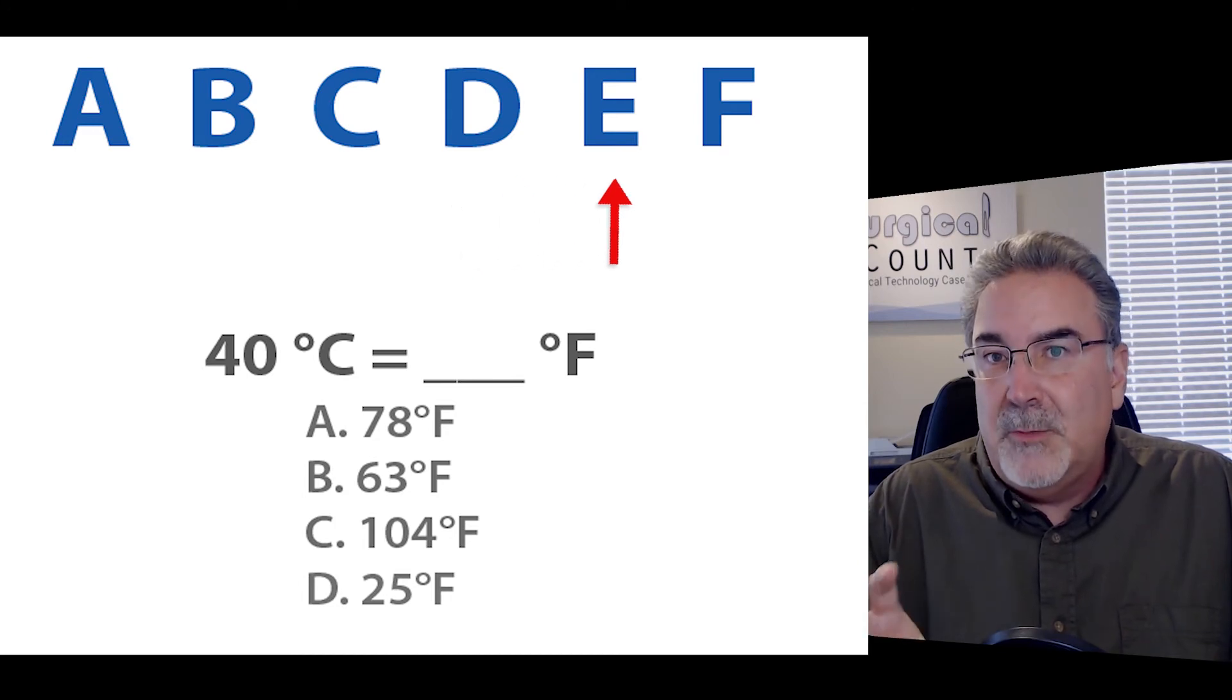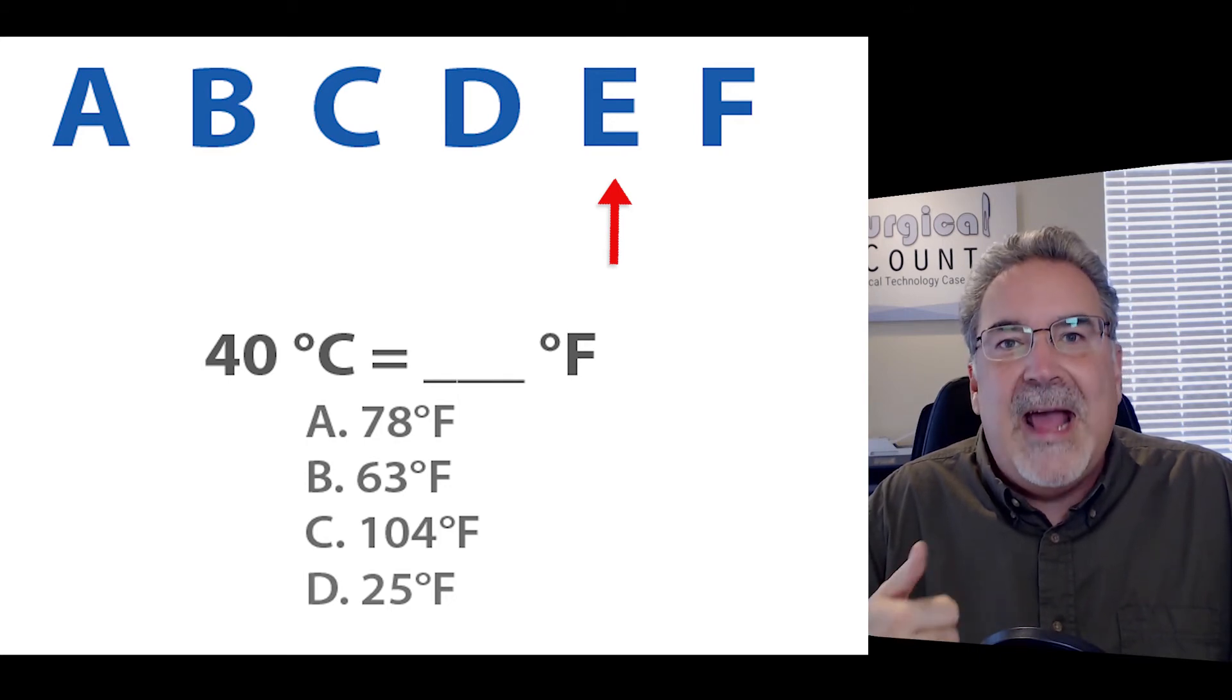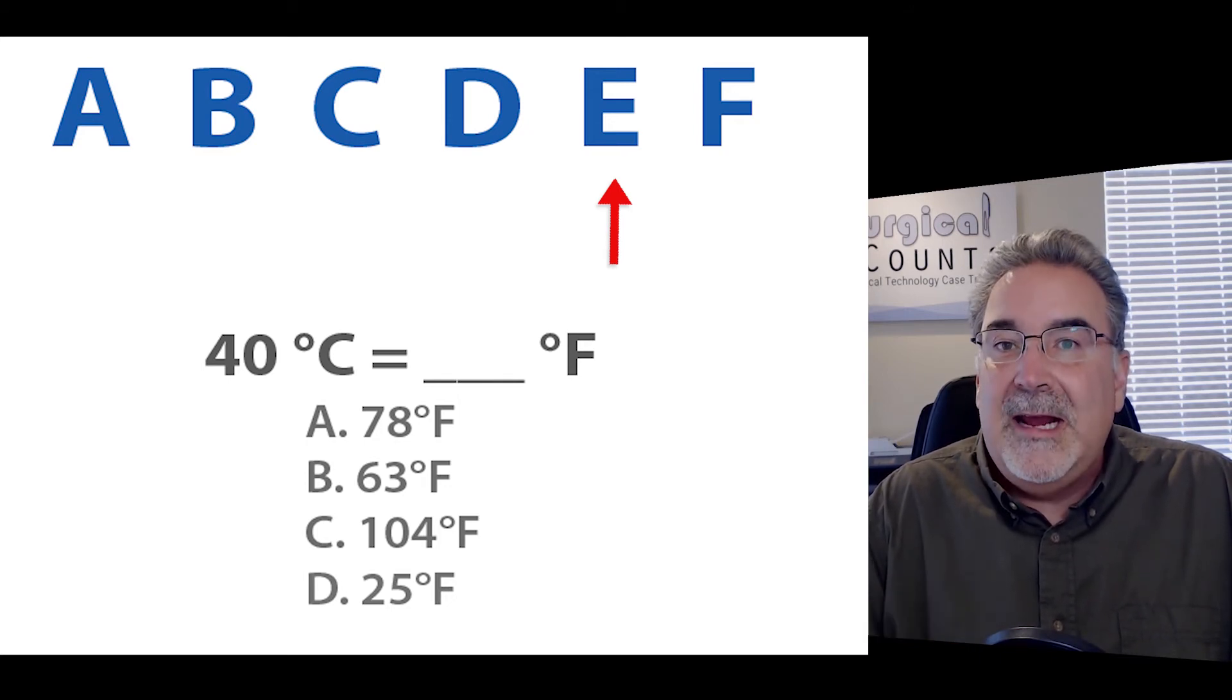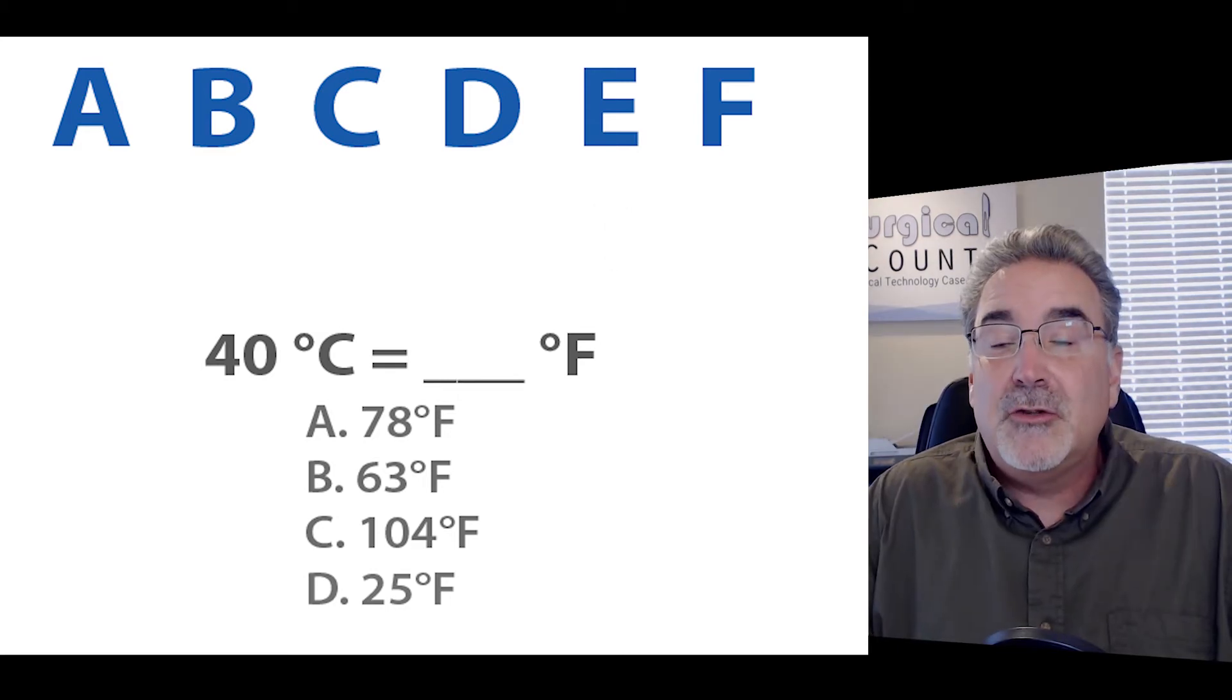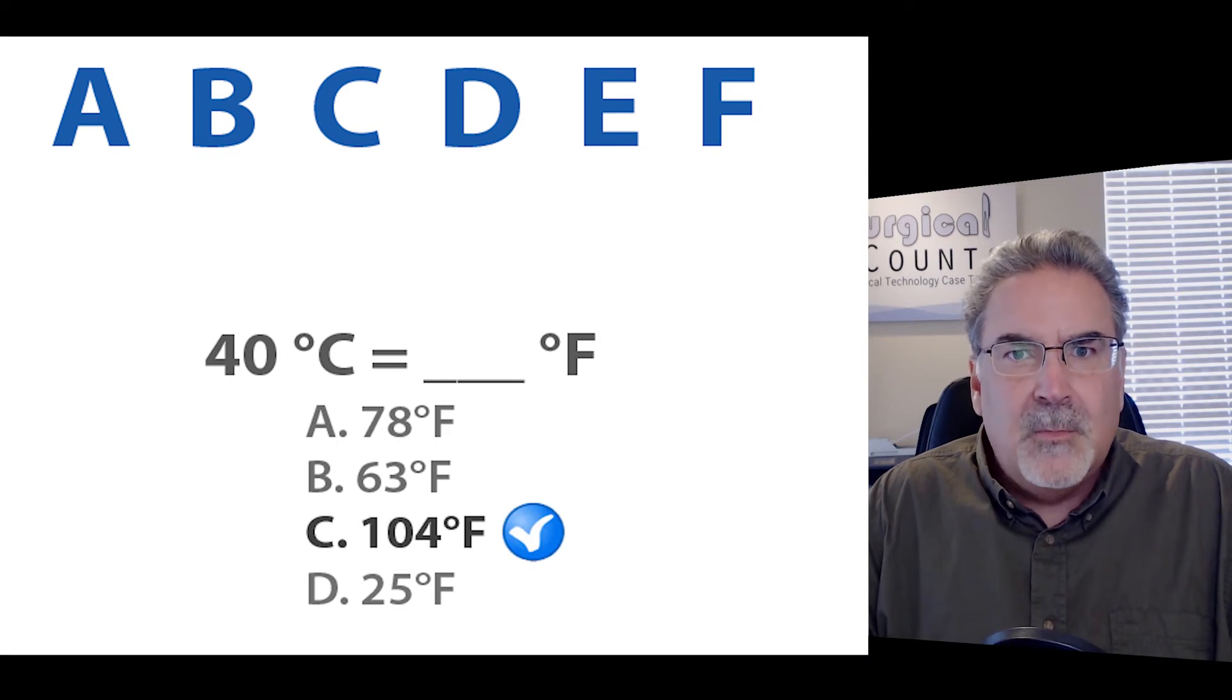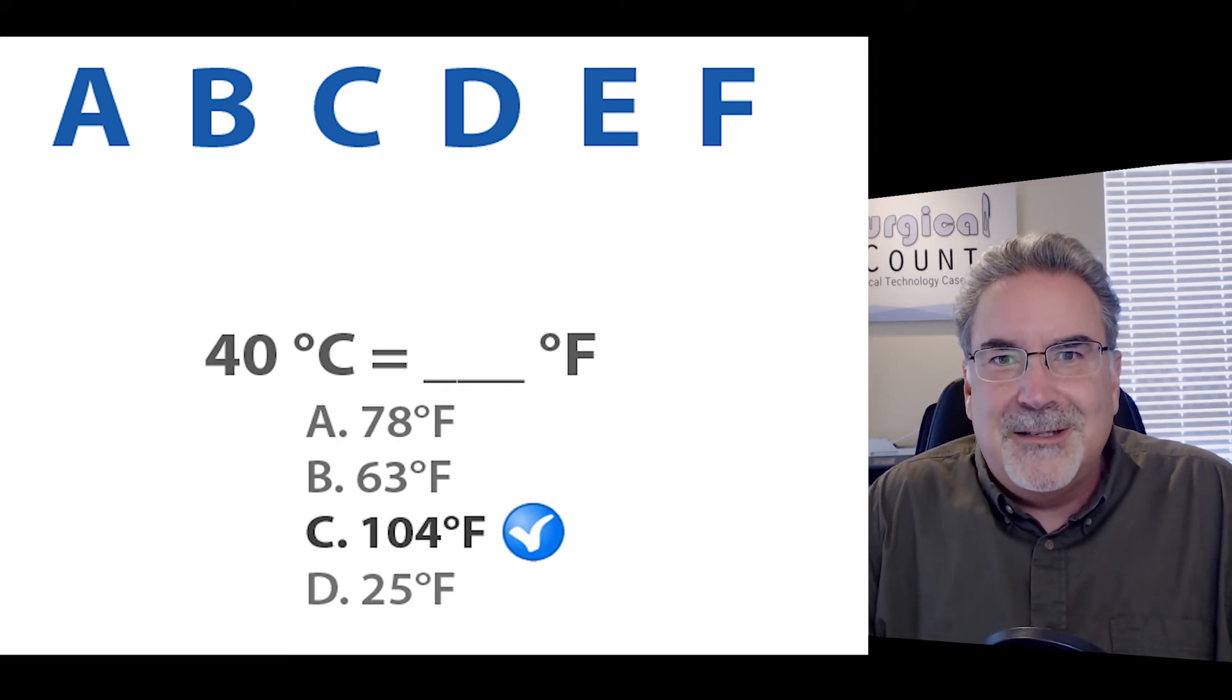Then we come to an E, which reminds us of 3 is 30. Are we going to add or subtract it? Well, we're going up the letter scale. So we're going to add it. So 80 plus 30, 90, 100, 110. And 110 is pretty close to 104, which is clearly the best answer in this list.